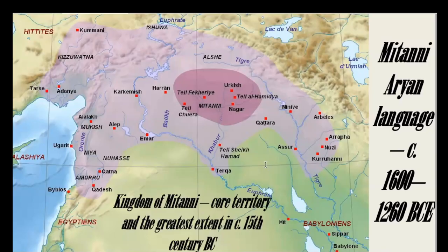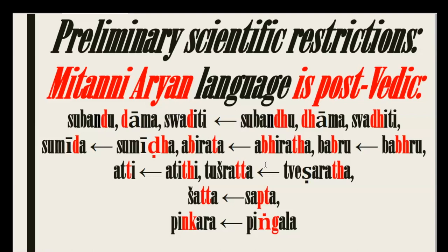We should look at the chronological stage of Mitanni Aryan language — the language of the Kingdom of Mitanni, which existed at its greatest extent around the 15th century BC, recorded between 1600 and 1260 BC. When we study the Mitanni Aryan words, we see that they are later than all Vedic words, because we have consonant combinations that are later in their stage of linguistic development compared with the Rig Vedic, Atharva Vedic, and general Vedic language.